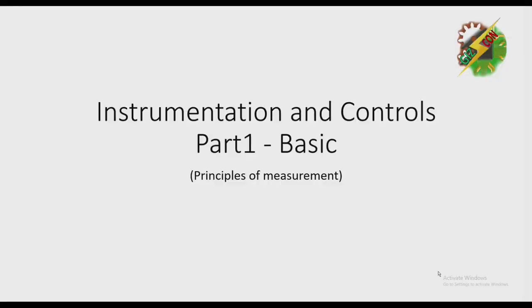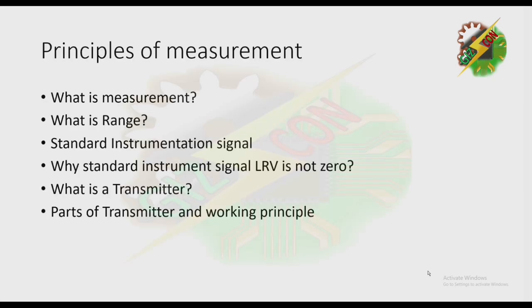Hello everyone, this is Andre again and now we're going to discuss Instrumentation and Controls Part 1, Basic. We're going to discuss first: what is Measurement, what is Range, Standard Instrumentation Signal, why the Standard Instrument Signal Lower Range Value is not zero, what is a Transmitter, and the Parts of a Transmitter and its Working Principle.